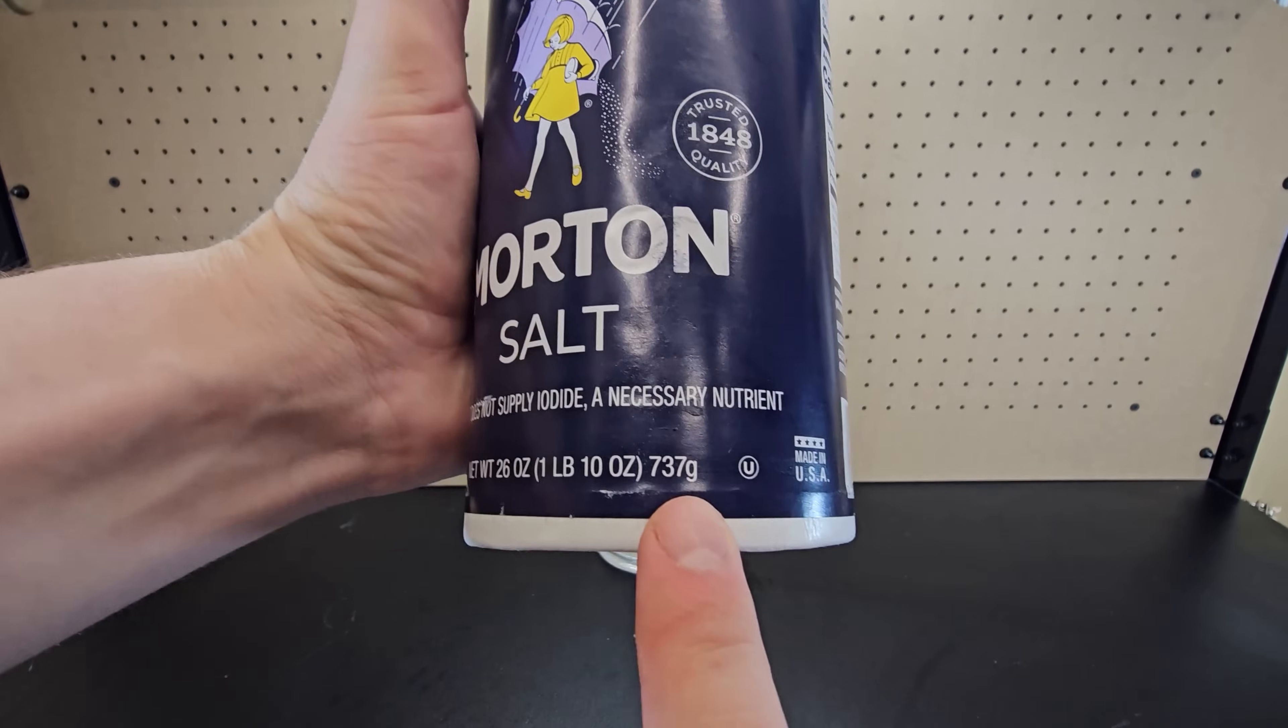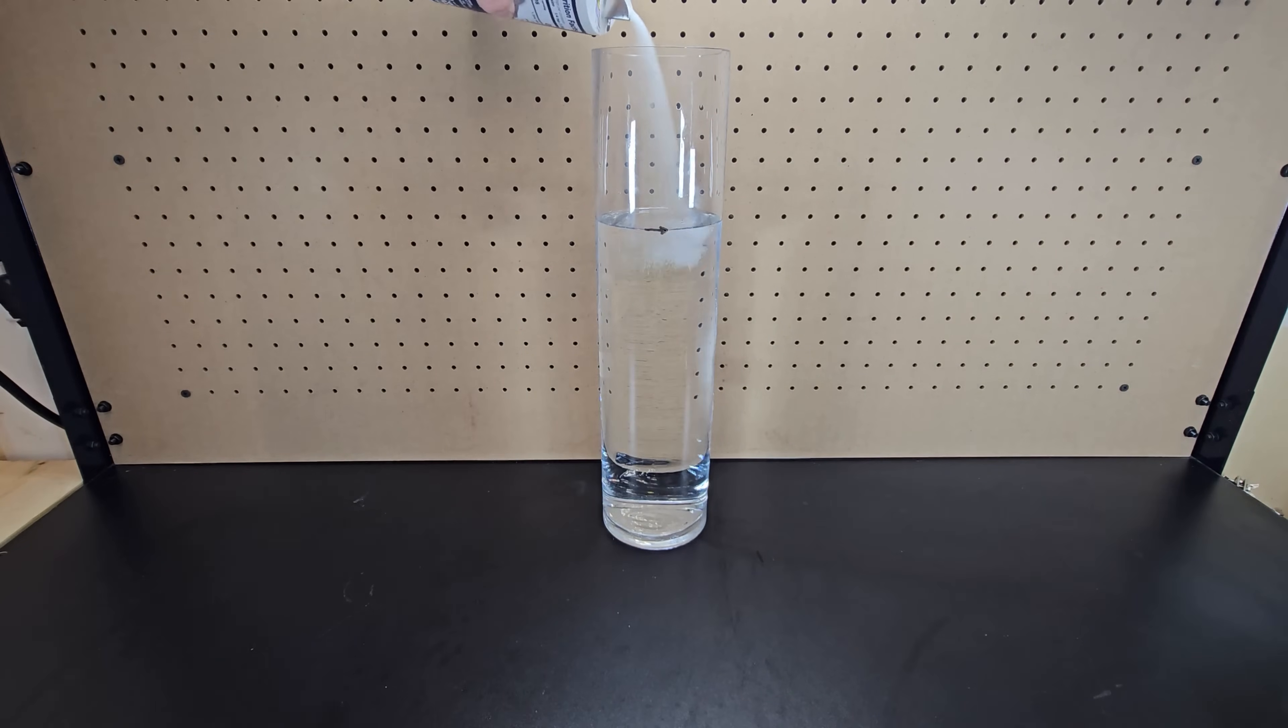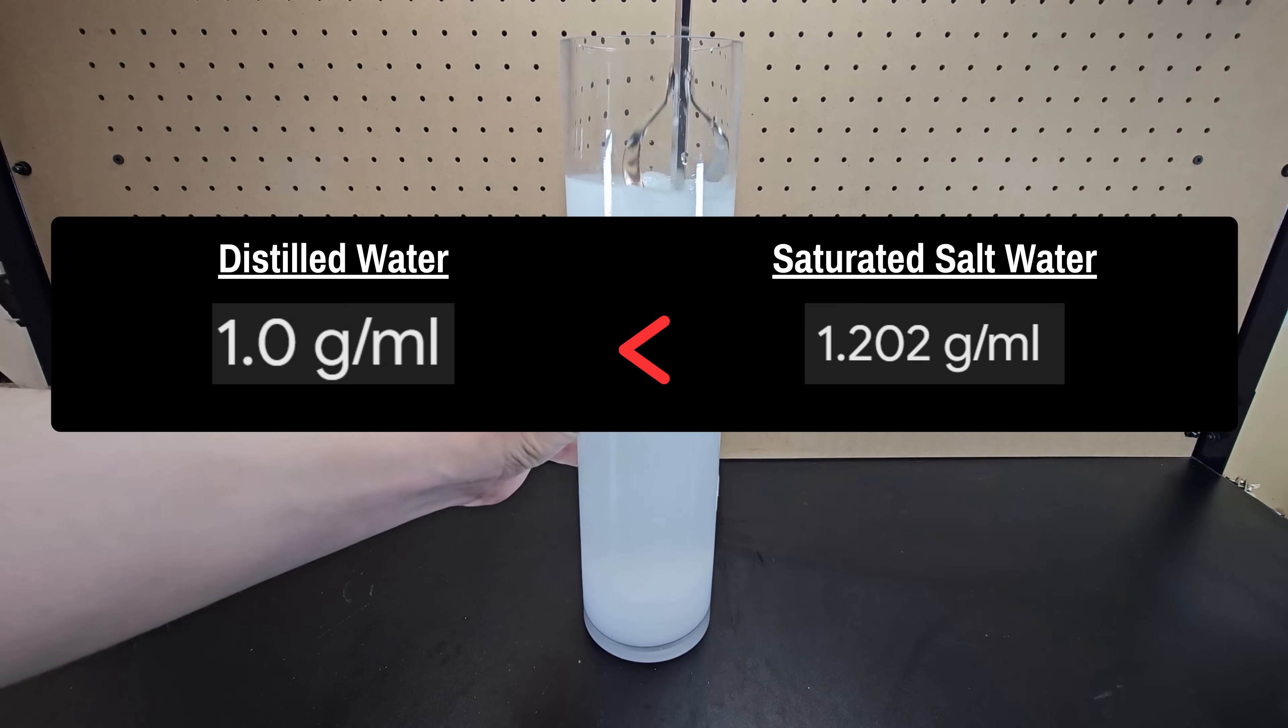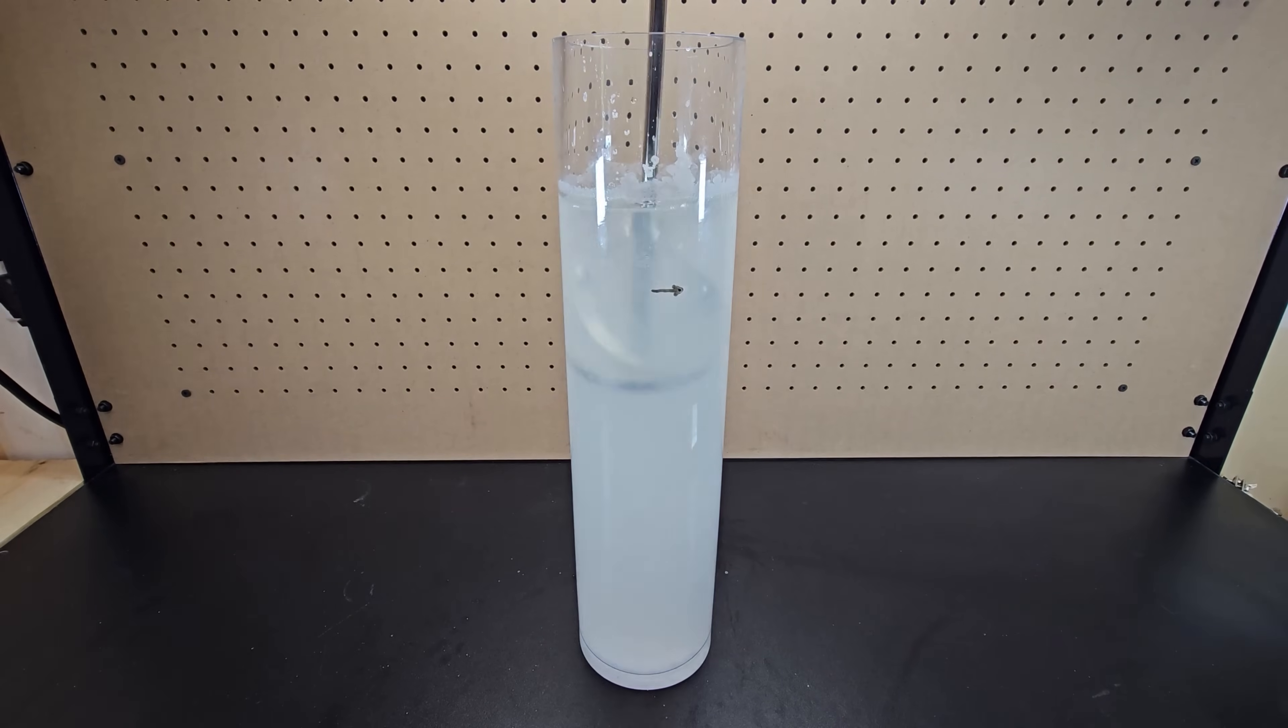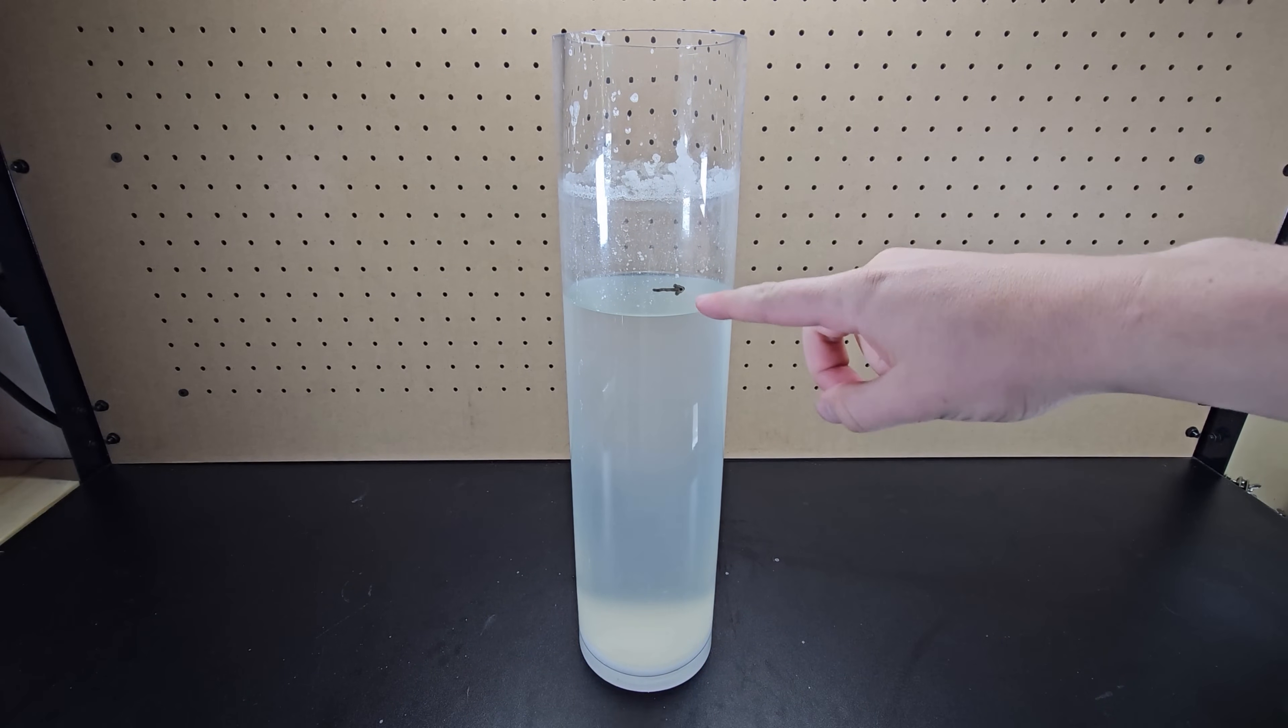If you measure out the maximum amount of salt you can dissolve in a given container of distilled water, the water level initially appears to rise when you add the salt, because the salt hasn't had time to dissolve. However, salt water is significantly more dense than pure water, so over the next 8 hours, stirring occasionally, the salt water level will actually be lower than the originally marked level of pure water only.